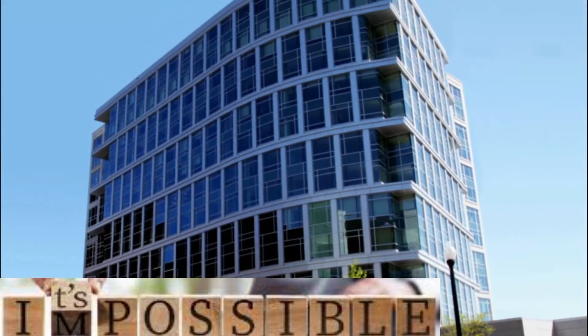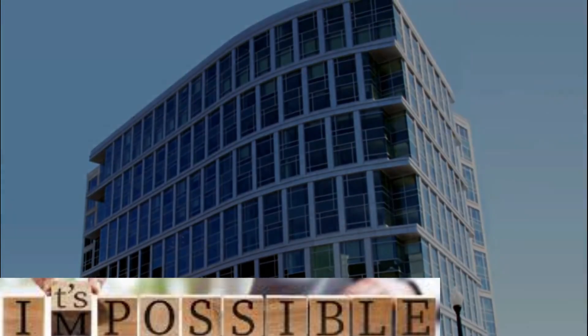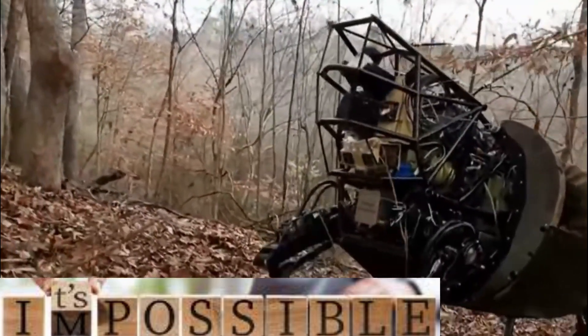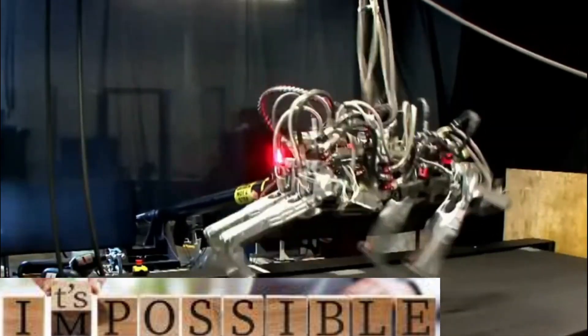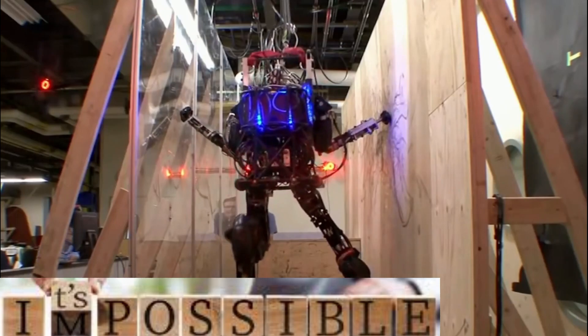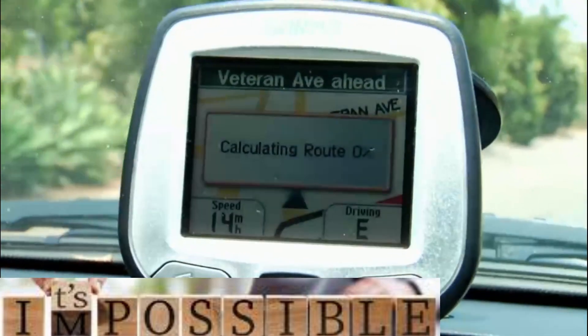DARPA headquarters, Arlington, Virginia. This is the military's visionary toy shop, where the blueprints for the weaponry of tomorrow are drawn. Here, stealth technology and GPS were conceived.